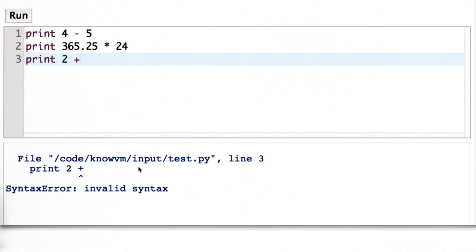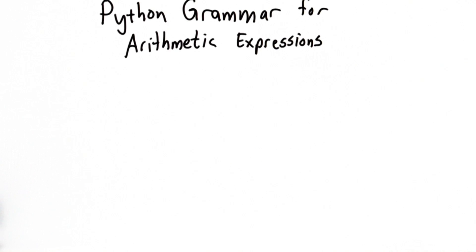Now we're going to look at the Python grammar for arithmetic expressions. We won't see the entire Python grammar here, but enough to get an idea of why the expressions we've seen were valid and why the '2 plus' is not.